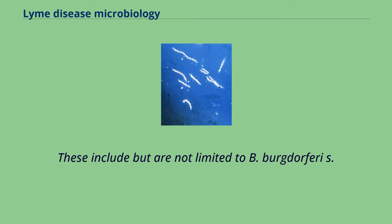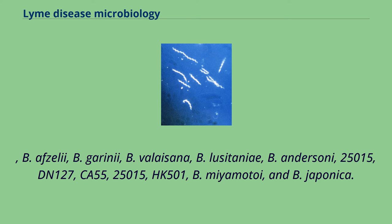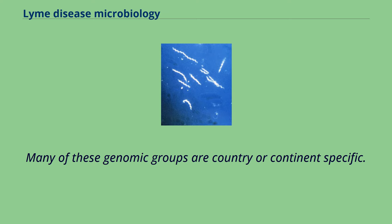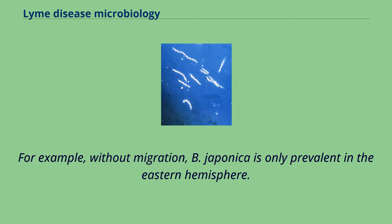These include but are not limited to B. burgdorferi s.s., B. afzelii, B. garinii, B. valaisiana, B. lusitaniae, B. andersonii, 25015, DN-127, CA-55, HK-501, B. miyamotoi, and B. japonica. Many of these genomic groups are country or continent-specific. For example, without migration, B. japonica is only prevalent in the eastern hemisphere.